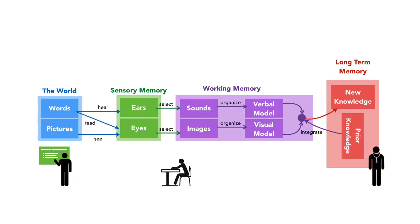Let's look at this cognitive model — this is how Richard Mayer depicts it. The world presents us with an infinite amount of data at any given moment, and our long-term memory has an expansive capacity for storage. The bottleneck, however, is getting it through the short-term memory. Data comes to us from the world through our senses — our eyes and our ears. Our sensory memory can hold information for just a few seconds. We select which information we want to pay attention to and bring that into our working memory, where we can hold on to it a little bit longer. There, we make sense of that by organizing it into models — a verbal model or a visual model. Finally, we integrate those two models together, along with prior knowledge, to encode new knowledge in the form of long-term memory.